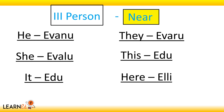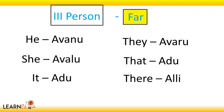So: he is iwanu, she is iwalu, it is idu, they are iwaru, this is idu, here is illi. All these words start with the letter 'i' — these refer to persons or things that are near us.